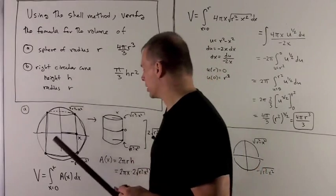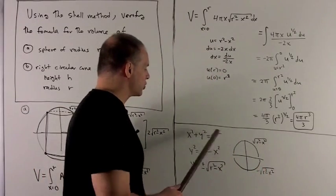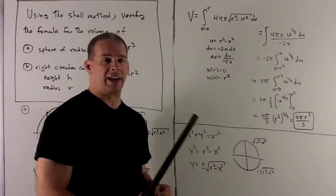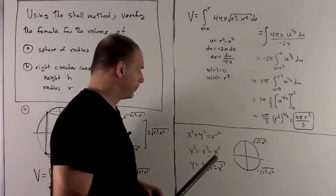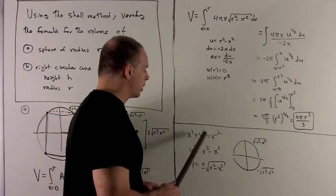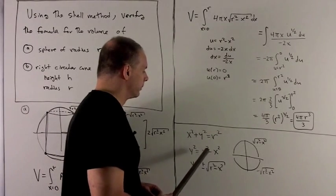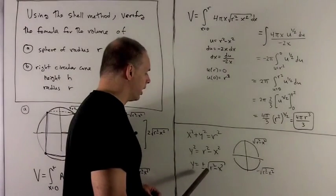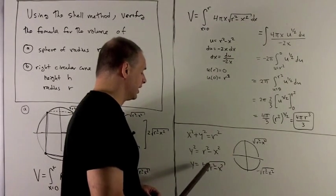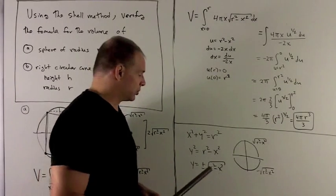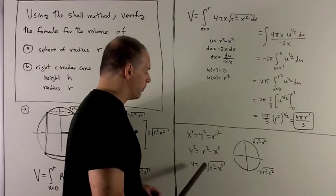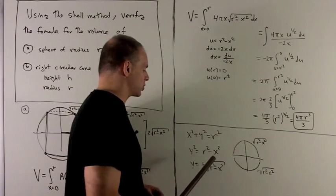We're looking at a circle of radius r, and then we're going to rotate that to get a sphere. So I have x² + y² = r². I can push the x² to the other side, then take the square root of both sides. That gives me two solutions: y = +√(r² - x²) and y = -√(r² - x²).